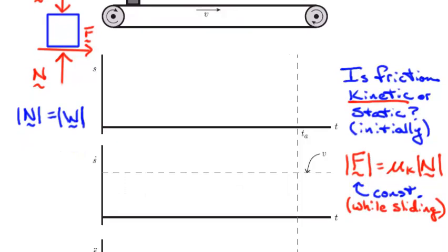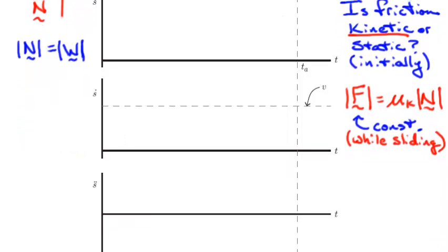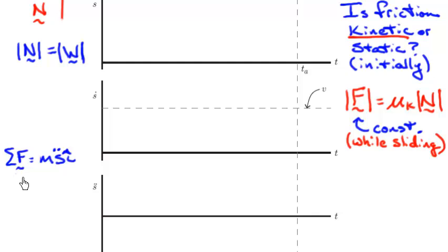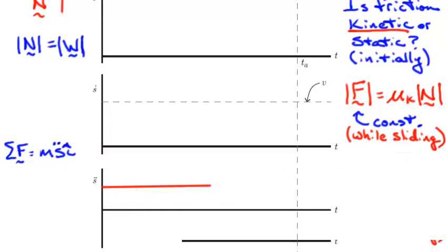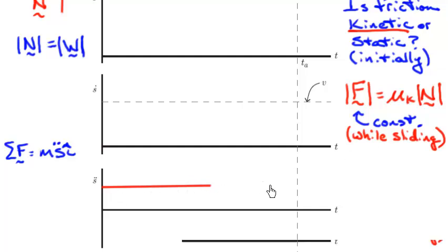Now let's go to the plots. I'm doing acceleration first because I know the friction force. Newton's second law: sum of forces equals mass times s-double-dot. Since the friction force is a constant in the positive direction, my acceleration must be a positive constant as well — but only for as long as the block is sliding. So I draw the acceleration as a positive constant, but only partway, since I know I'm sliding at the very beginning but maybe not at the very end.